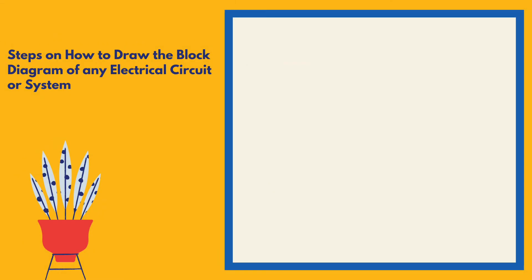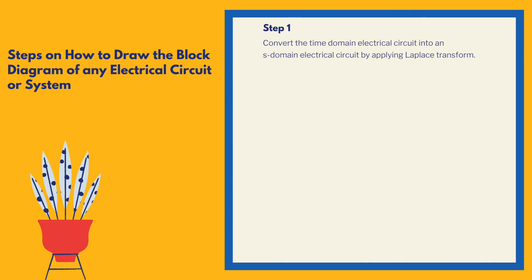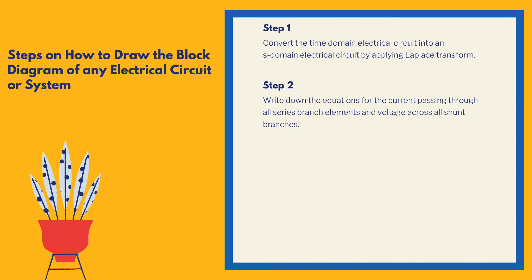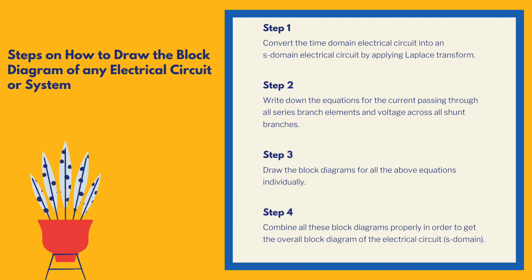Here are the steps on how to draw the block diagram of any electrical circuit or system. The first step is to convert the time domain electrical circuit into an S domain electrical circuit by applying the Laplace transform. Second, write down the equations for the current passing through all series branch elements and voltage across all shunt branches. Third, draw the block diagrams for all the above equations individually. The last step is to combine all these block diagrams properly in order to get the overall block diagram of the electrical circuit in the S domain.